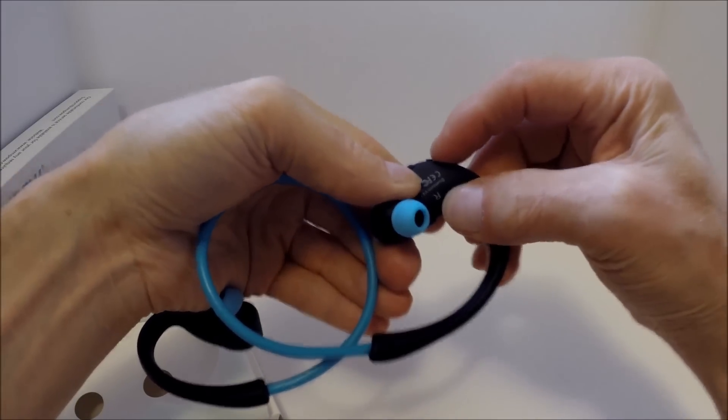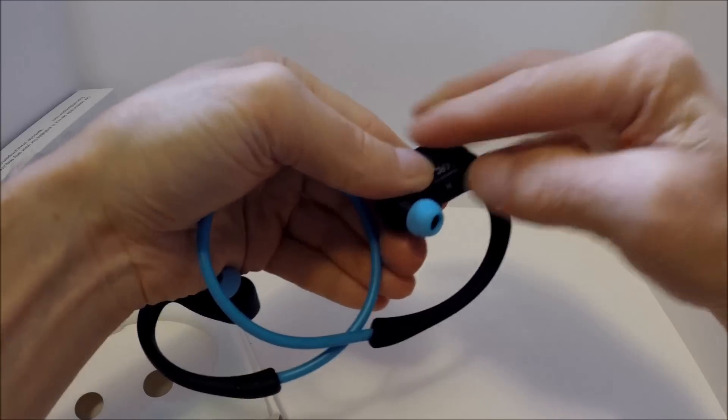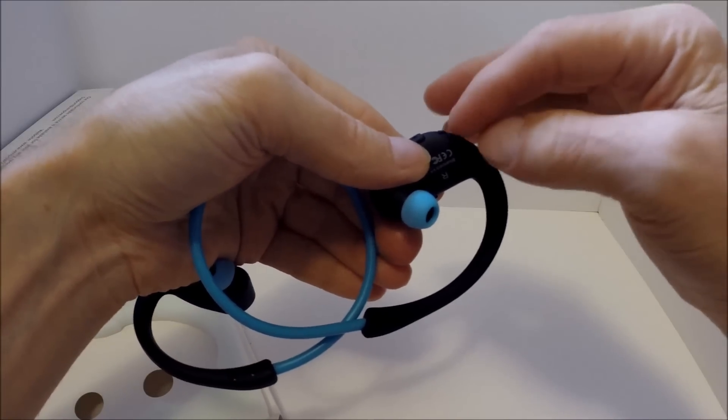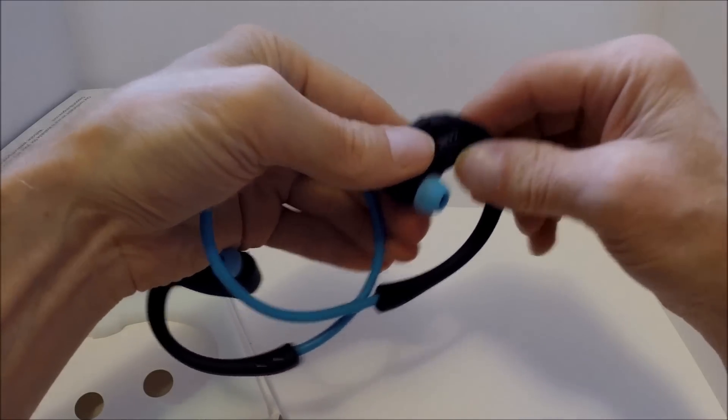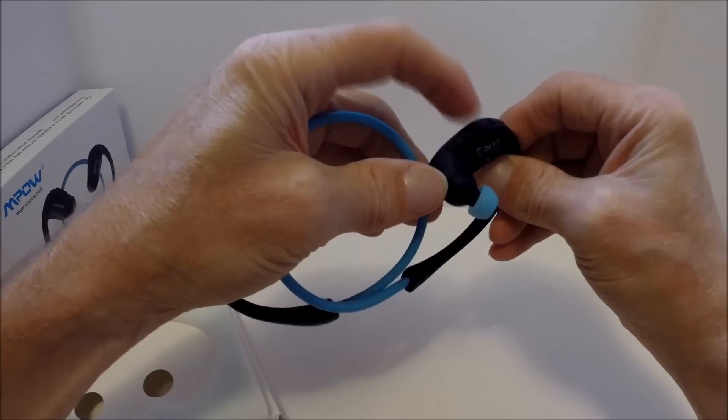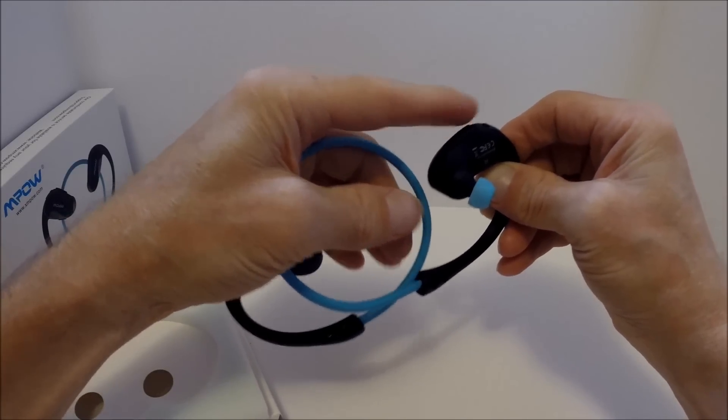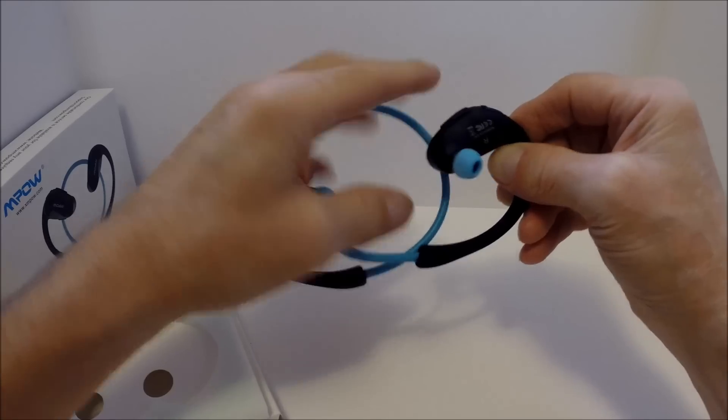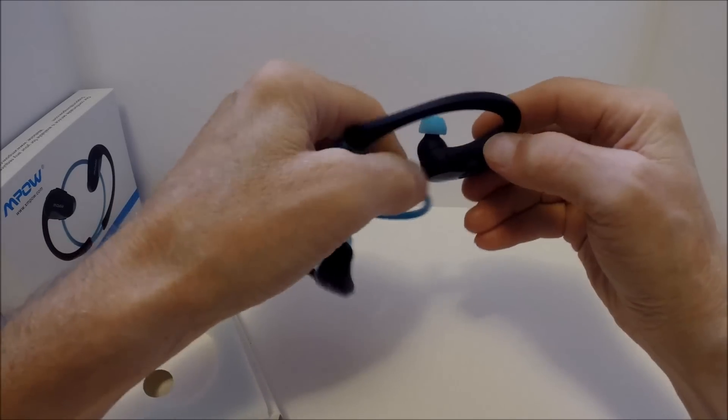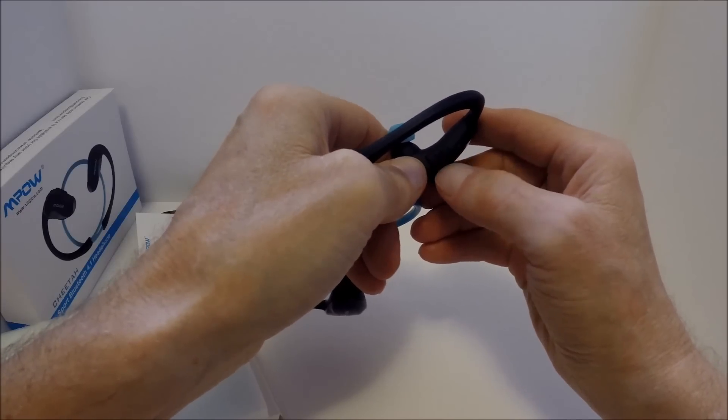Sitting flush is a bonus because there are a lot of these that do not sit flush. Then you have your plus and minus for volume up and down, and track advance or track back.